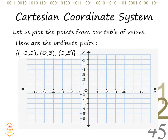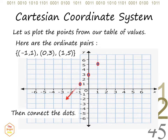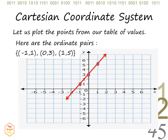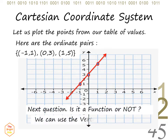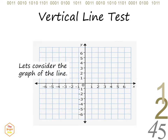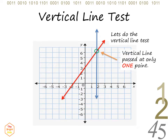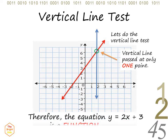Now, let's plot the points of the ordered pairs from our table of values. After plotting the points, notice that they form a straight line. To determine if this is a function or not, we can use the vertical line test. Notice that the vertical line passed the given line at only one point. Since there is only one point of intersection, equation number 1 is a function.